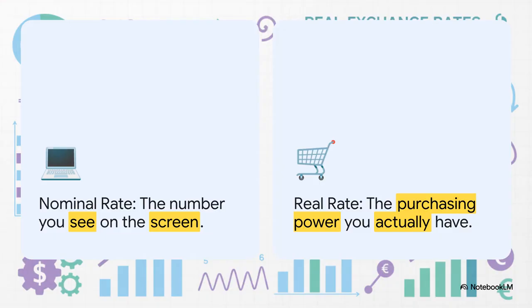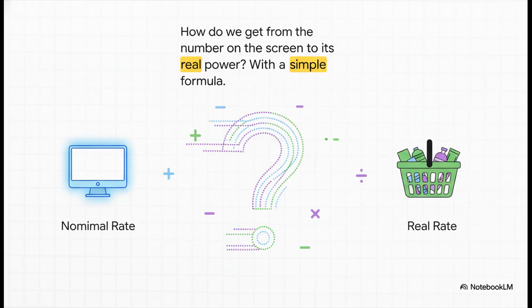So it really comes down to two different ideas. First, you've got the nominal rate — that's the one we all know, the official number you see on the screen. But then there's the other side of the coin: the real rate. And this is the one that truly matters because it's about your actual, real-world purchasing power. So how do we bridge that gap — from the simple number on our phone to what our money can actually do for us in another country?